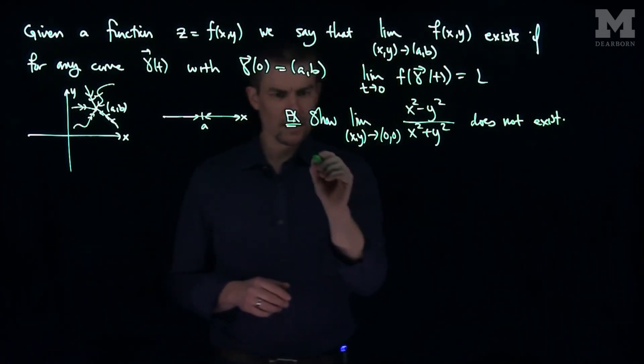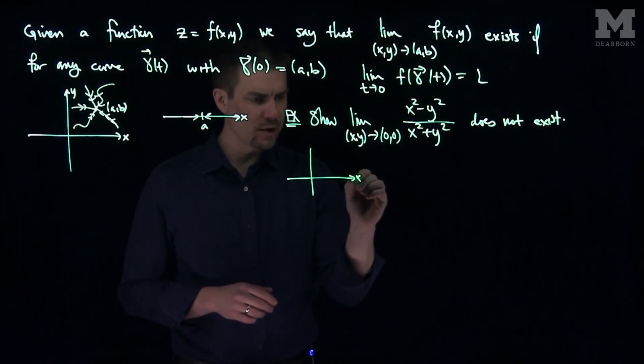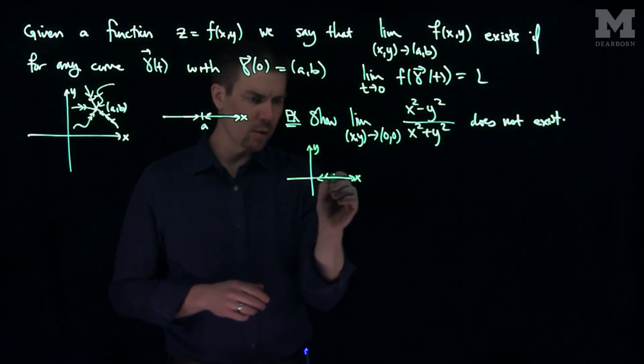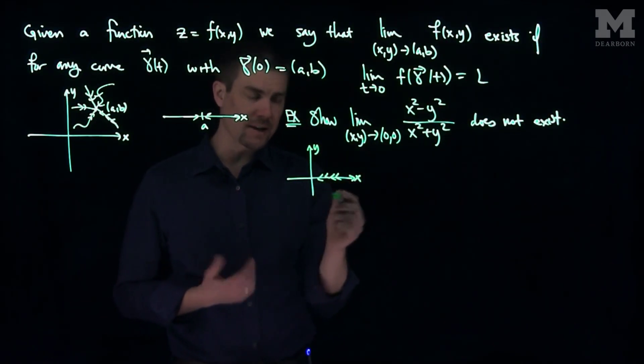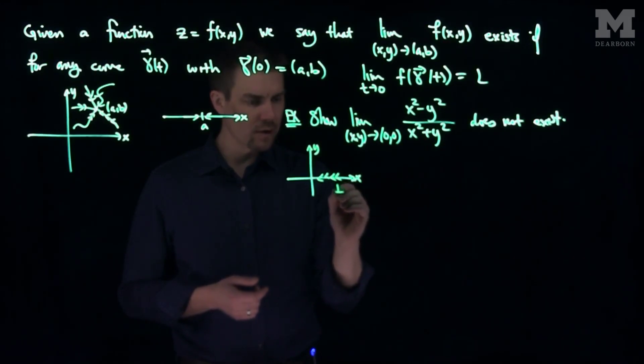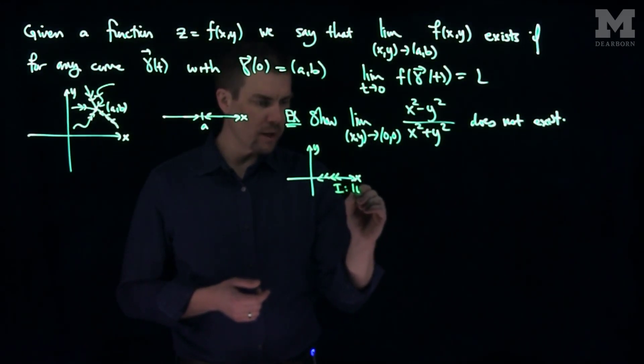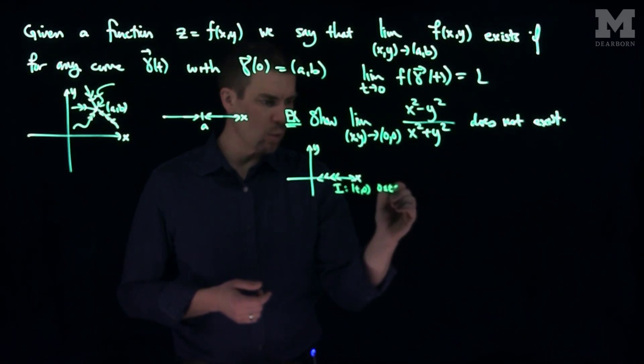So what we'll do is we'll look at two different ways to get to the origin. Here's my x-axis and here's my y-axis. The first way I'll get to the origin, to 0, 0, is I'll move along the x-axis. So this curve over here, I'll call that curve number 1. Curve number 1 would be t comma 0 for t between 0 and 1.